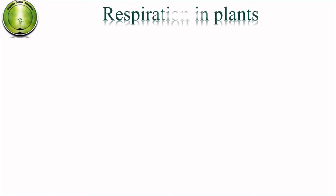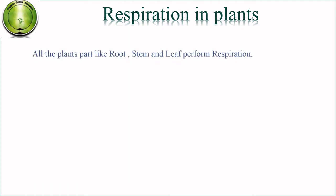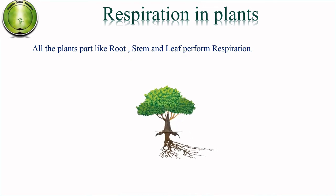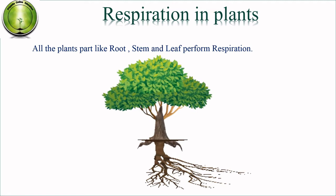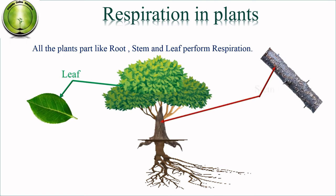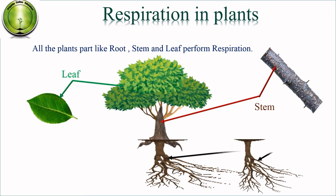Respiration in plants: all plant parts like root, stem, and leaf perform respiration. All three parts — root, stem, and leaf — participate in respiration. In leaves, respiration occurs through stomata. In stem, respiration occurs through stomata and lenticels. In roots, respiration occurs through root hairs.